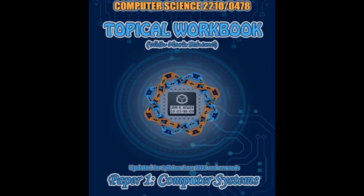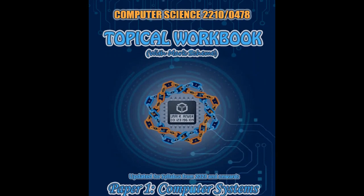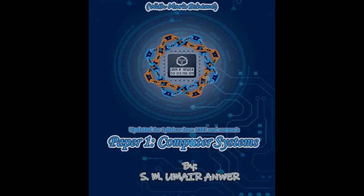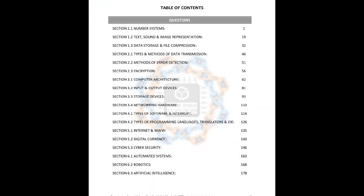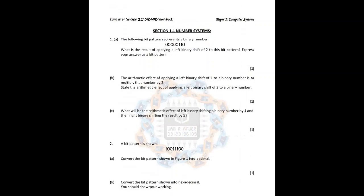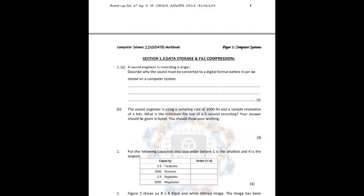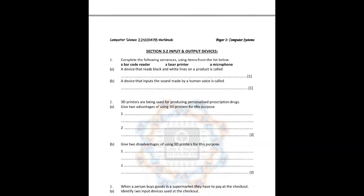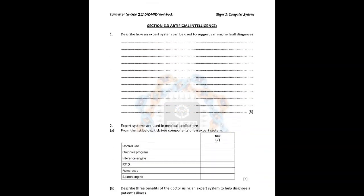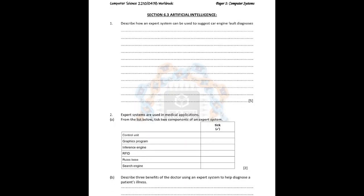Let me introduce the topical workbook for computer science 2210 or 0478. This is workbook one for paper one — computer systems. As you can see from the table of contents, I've included questions on each and every subtopic from the syllabus, along with the mark scheme. There are many more questions where these come from — around 18 to 20 questions on average for each topic. A must buy if you want to boost your grade.